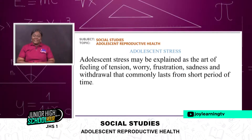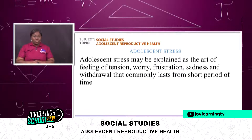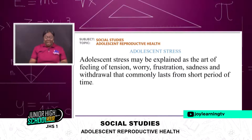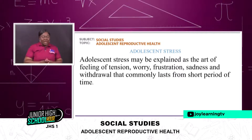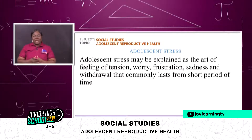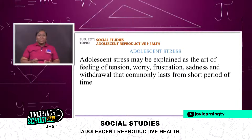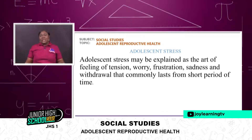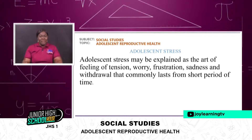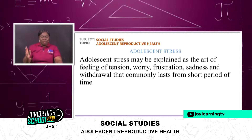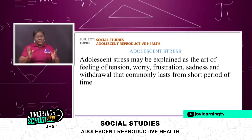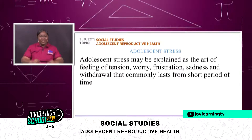Now let's look at adolescent stress — adolescents also go through stress. Adolescent stress may be explained as the feeling of tension, worry, frustration, sadness, and withdrawal that commonly lasts for a short period of time. Sometimes mommy will tell you you're not going to this party, and the adolescent is down and doesn't understand why mommy is saying that. Mommy should rather explain the reasons to the adolescent, because if you just say no without explanation, the adolescent becomes worried and frustrated.